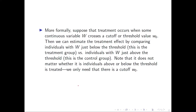Let's say that we have a treatment which affects a y variable, and we have the w variable which is decisive in deciding who gets treatment or not. We have W-naught, which is the cutoff. Just be aware that either side of the cutoff can be the treatment group, so the treatment group can be those to the right or to the left of the cutoff, but the control group has to be the opposite side.